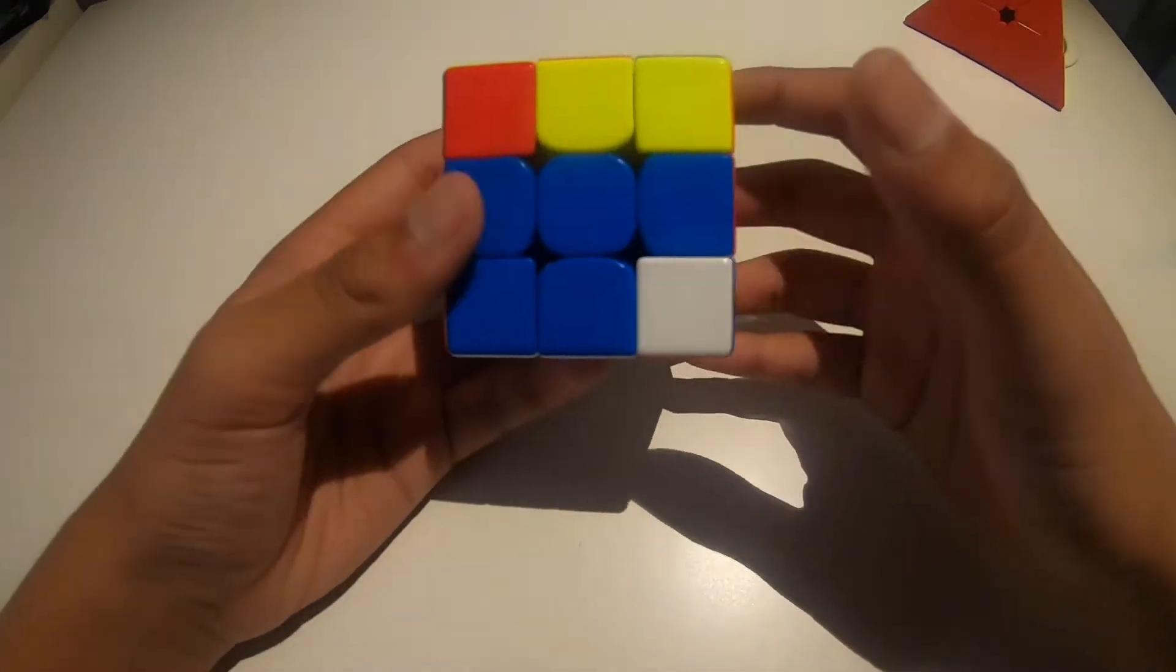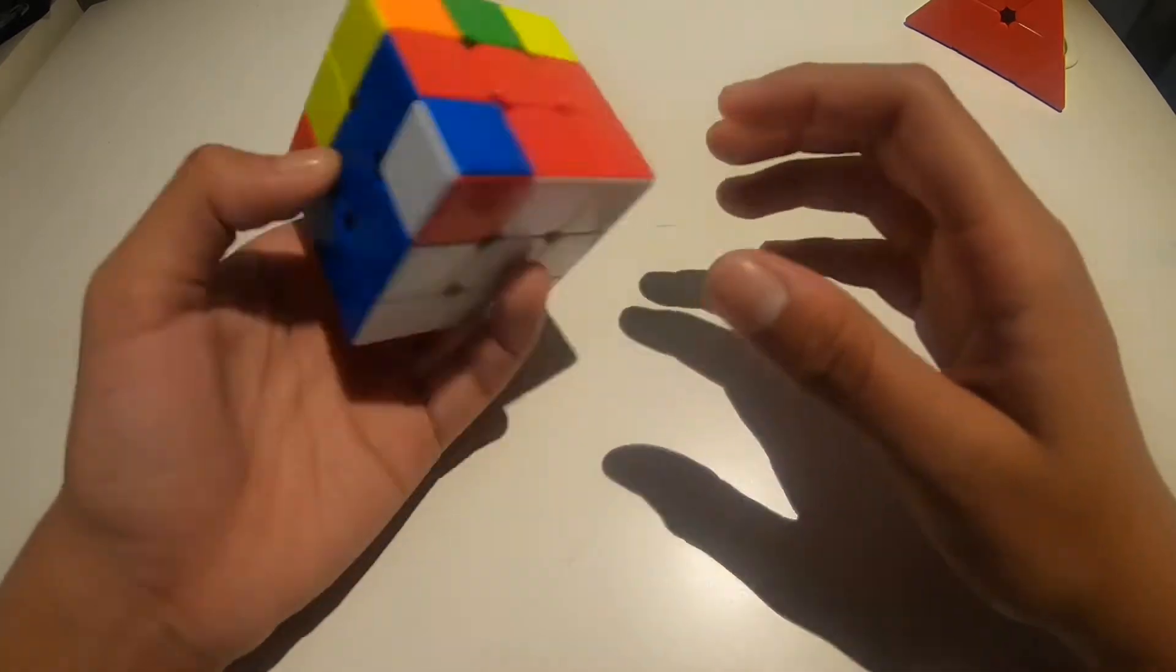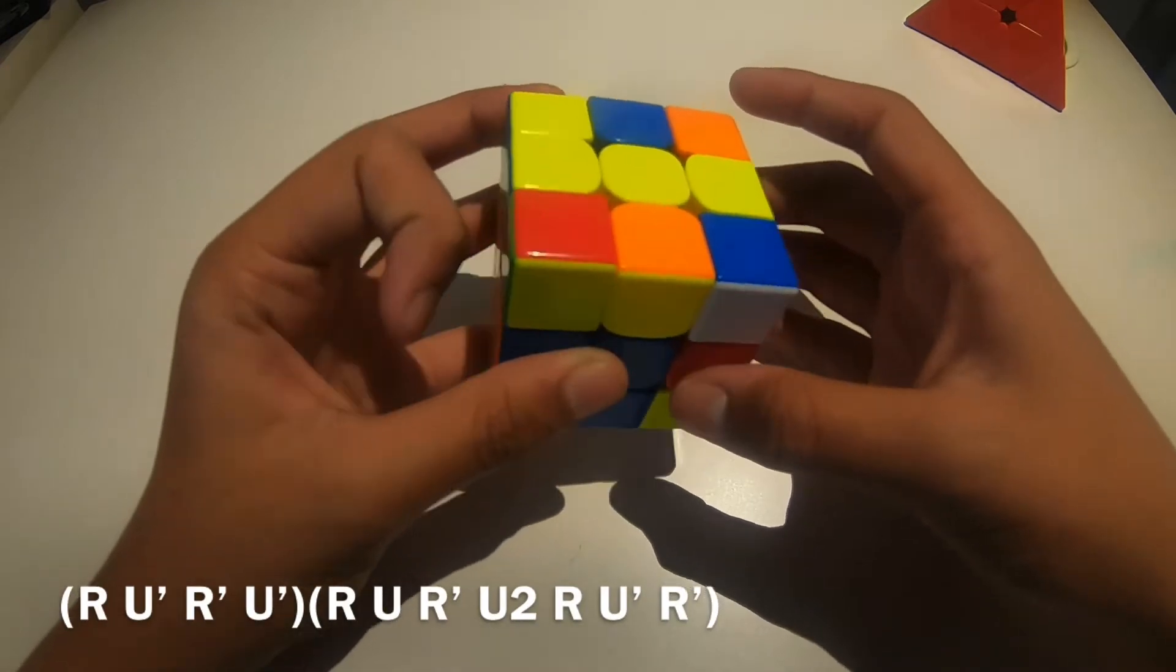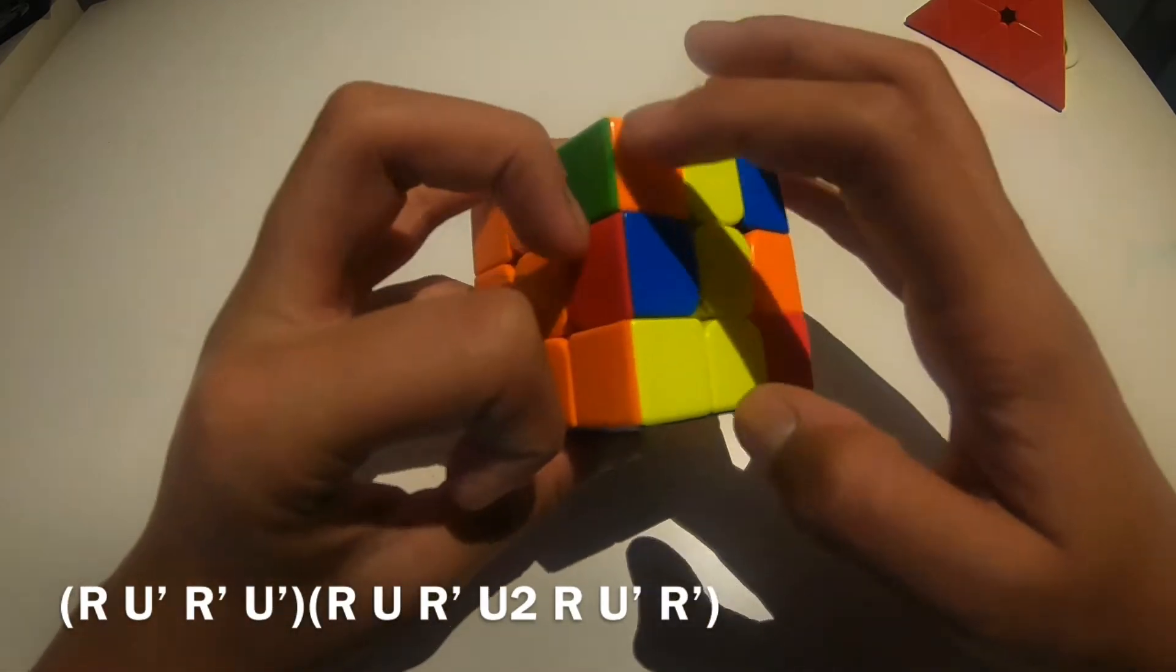Now, we're going to go into this case where the white is facing up. So again, there's two ways to do it, which is basically like this. Split it up, R U' R' middle finger, U'.